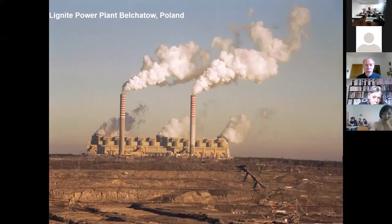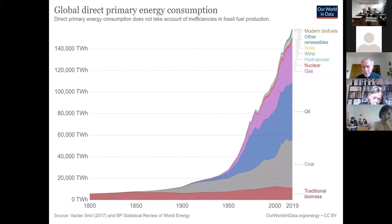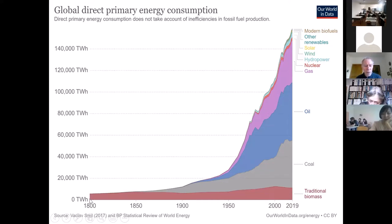This is the global direct primary energy consumption. You see it's more than 85% which relies on fossils. You have coal — the gray area — oil, and gas: the three types of fossil resources. When it comes to biofuel, the traditional one — wood — in 1800 it was only that, but now it's just a few percent. Up here you have modern fuels: nuclear, wind power, etc. You can see fossils are very dominating.